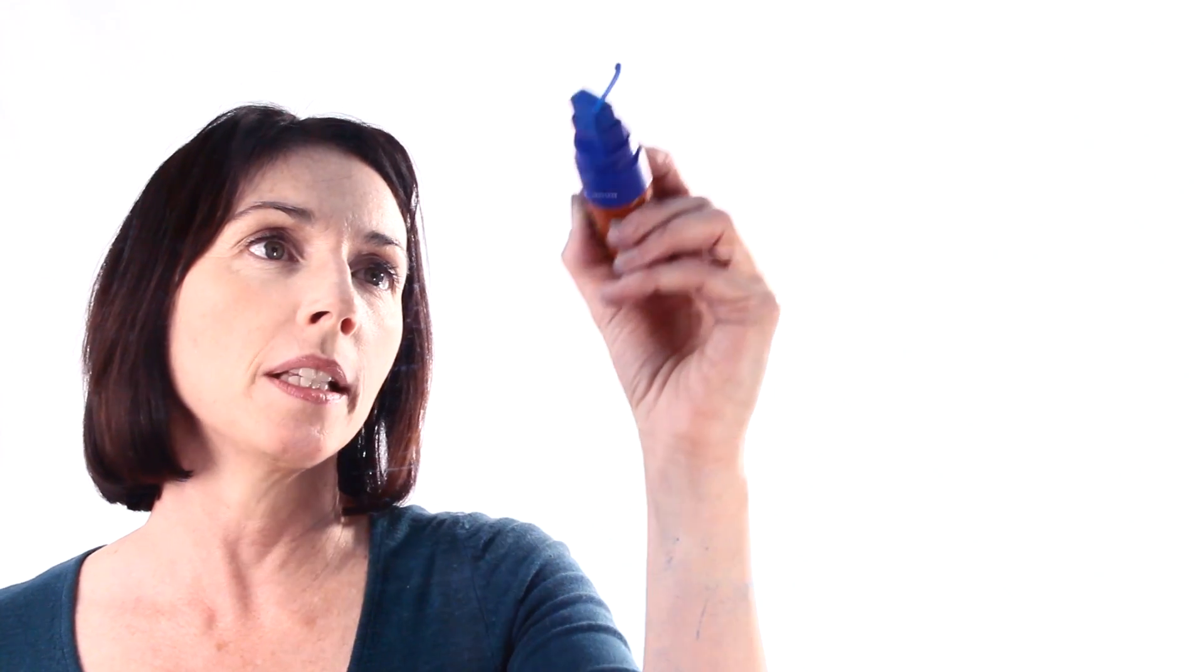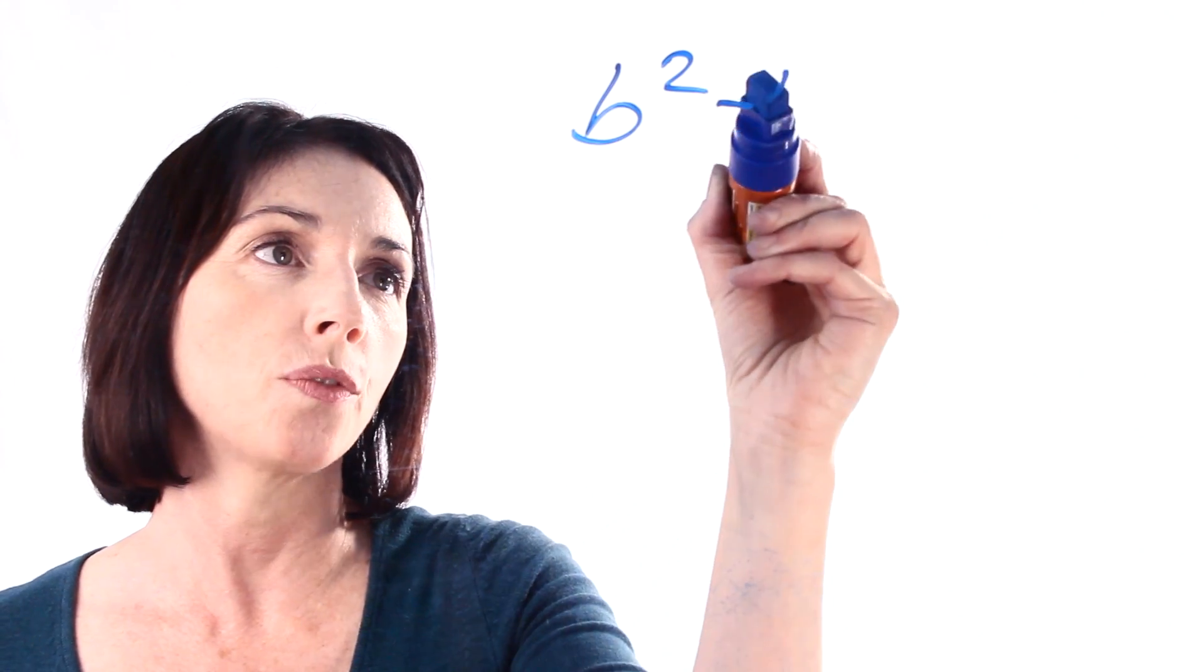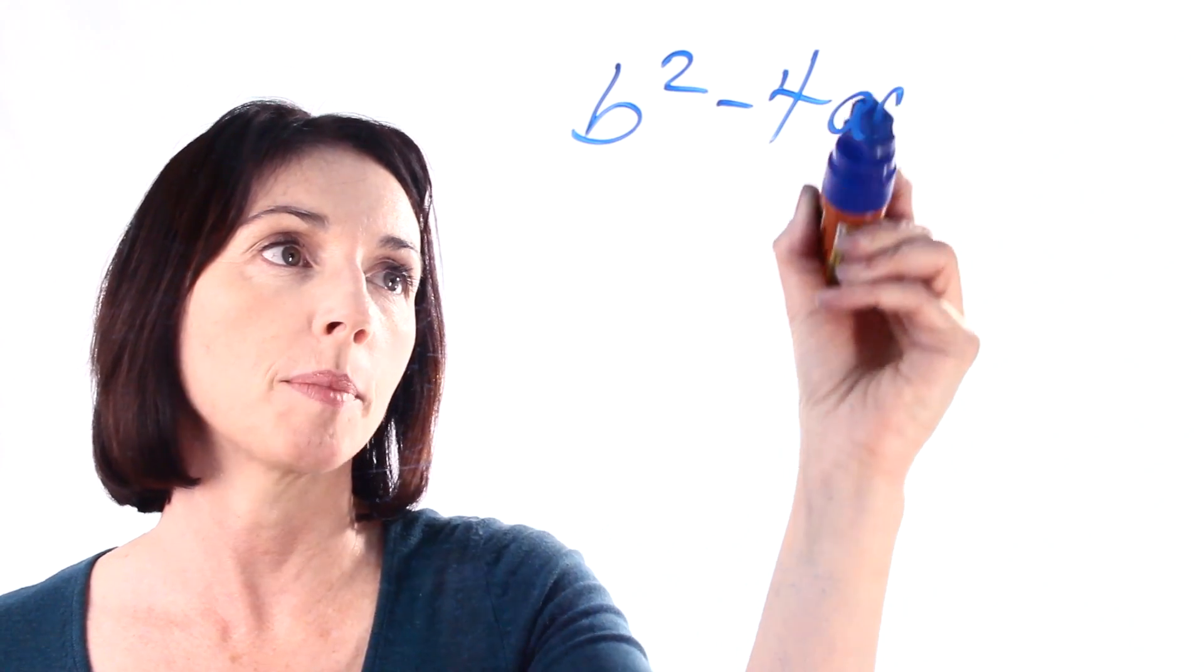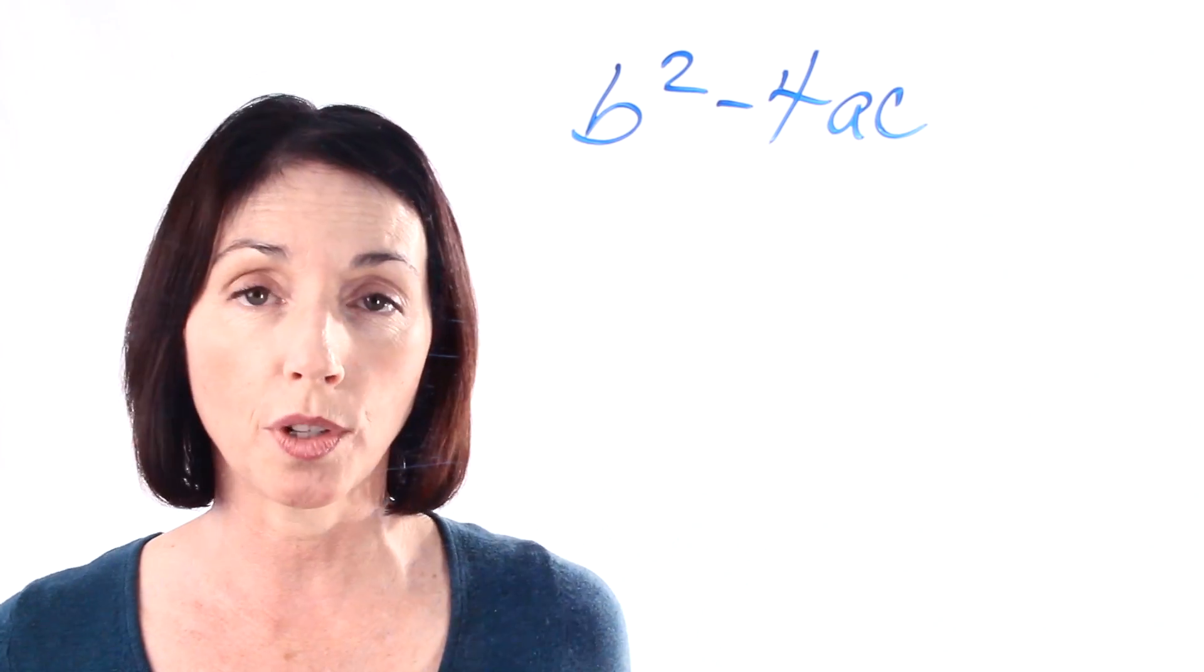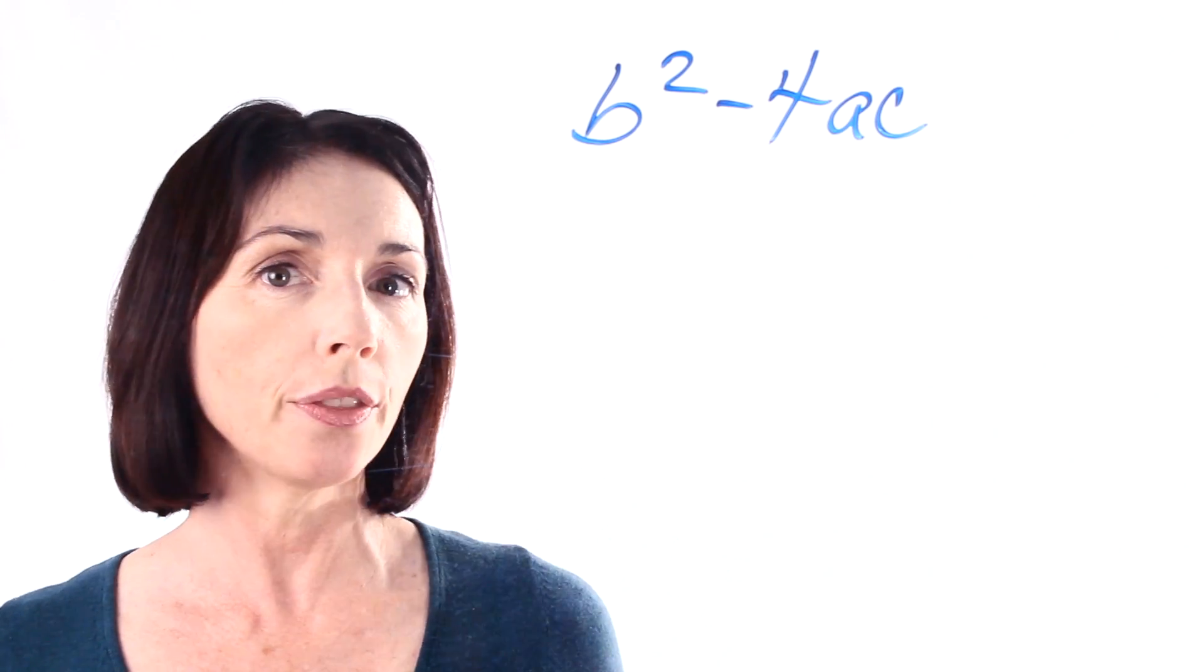The discriminant is b squared minus 4 times a times c. So when you plug those values in for whatever quadratic equation you're working with, you'll get three possibilities.